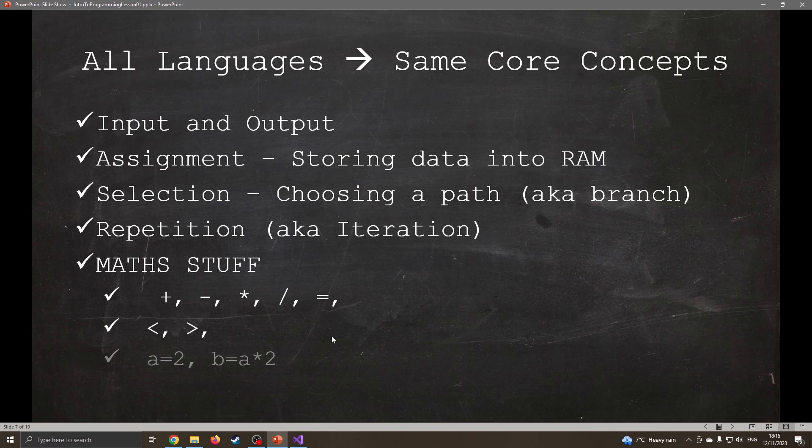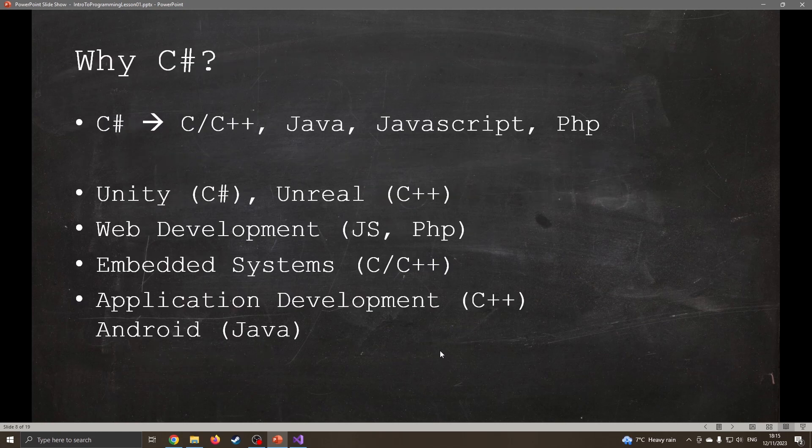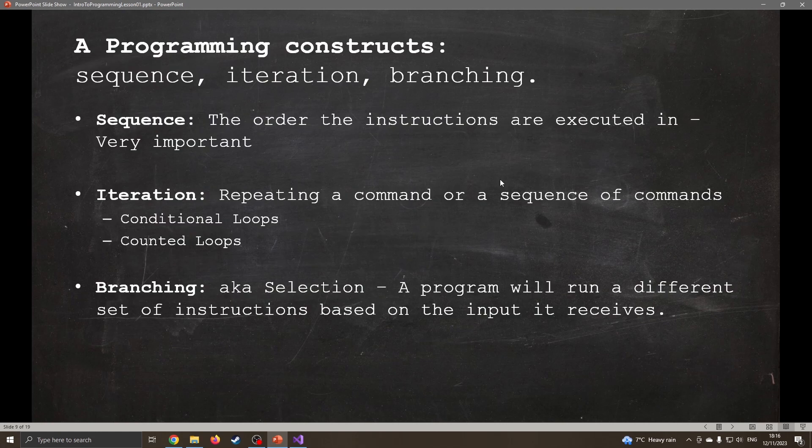And then it comes down to the math stuff, so addition, subtraction, multiply and divide, or greater than and less than signs, and a little bit of algebra. So why C sharp? Well, C sharp is a nice learning language. It can then lead into C, C++, Java, JavaScript, PHP because these all have an extremely similar syntax. Unreal uses C++, web development uses JavaScript and PHP, embedded systems commonly use C and C++, and again these are all very similar so you could almost copy and paste some code between these languages. We can create applications in C++ and C sharp, we can do Android development using Java, so the code is very similar.